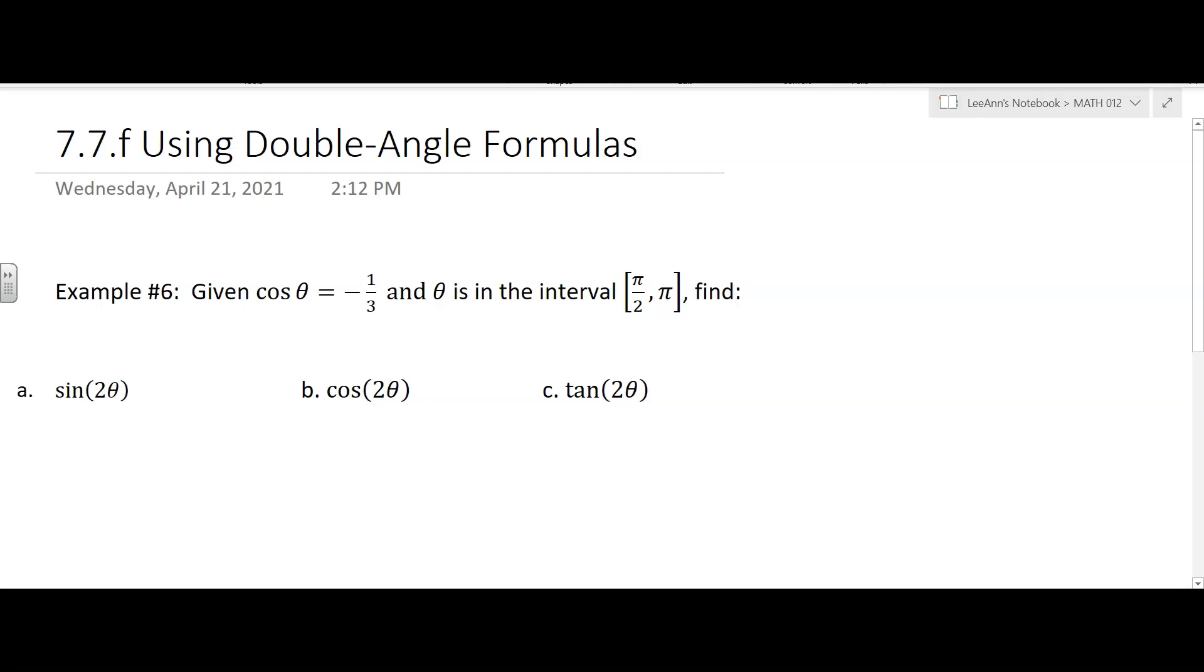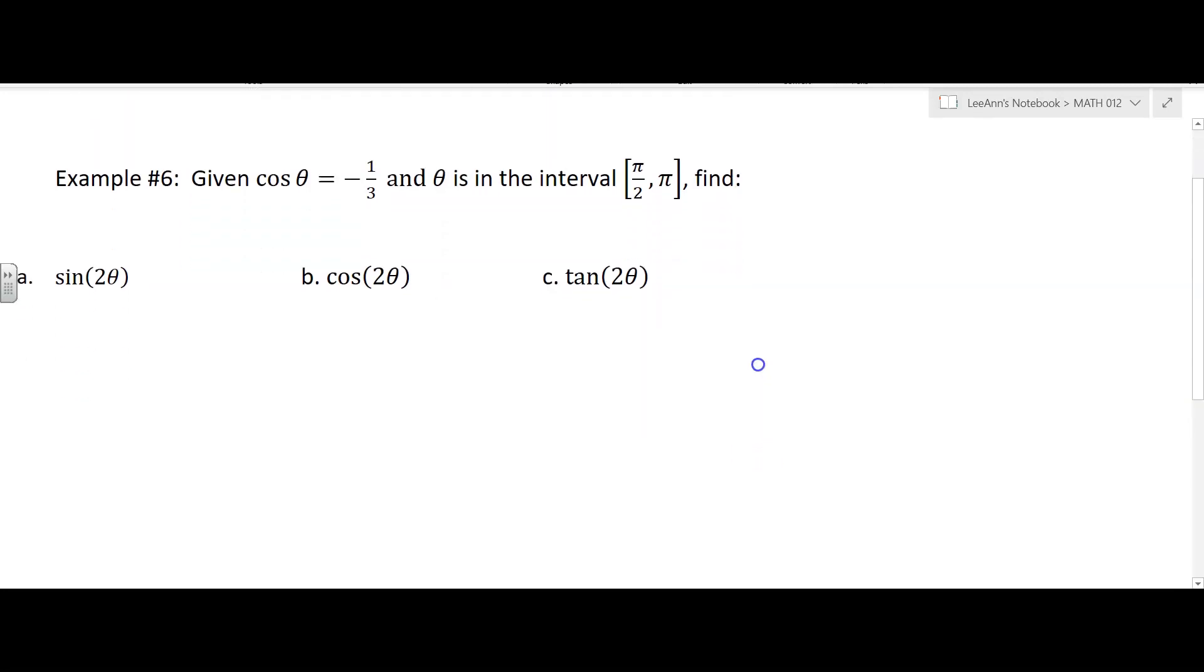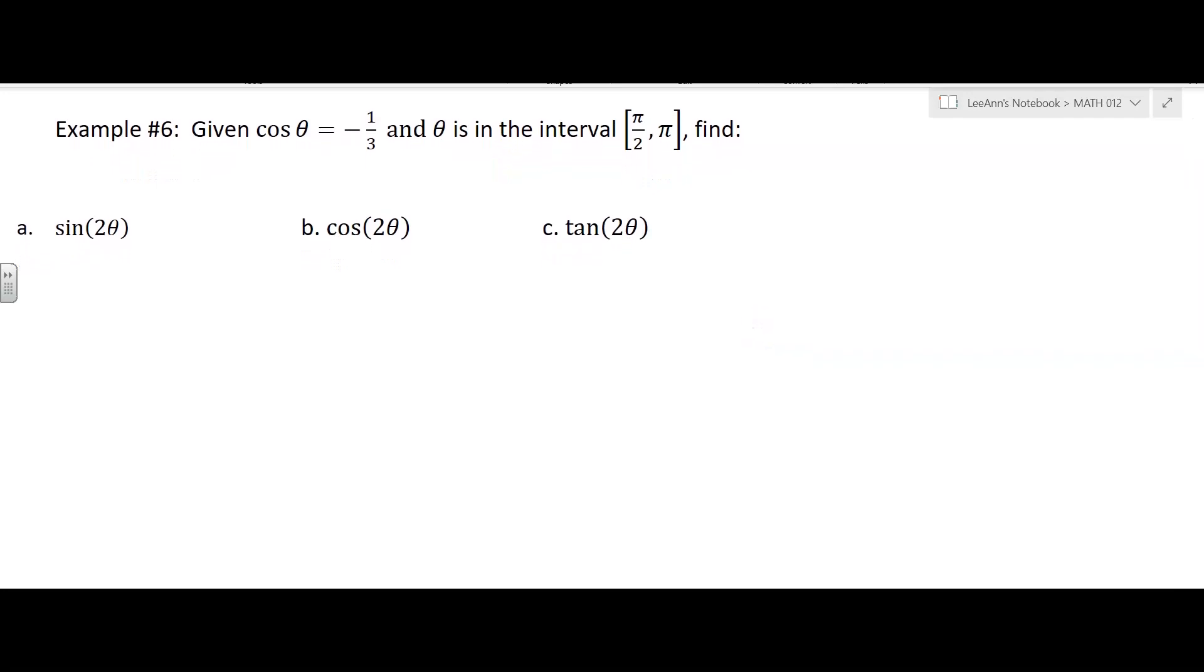Okay, so I like this type of problem. It's giving you some information - it says the cosine of theta is negative one-third, and it tells you that theta is between π/2 and π, and they want us to find these double angle formulas.